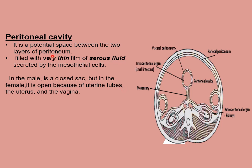The peritoneal cavity is a potential space between the two layers of the peritoneum — visceral and parietal layers. In the male, it is a closed sac, but in the female it is open because of the uterine tubes, uterus, and vagina. Here in this transverse section you can again appreciate that the investigated viscera is surrounded by the visceral layer of peritoneum, while the outer layer that lines the abdominal wall is the parietal layer. In between these two layers is the peritoneal cavity.